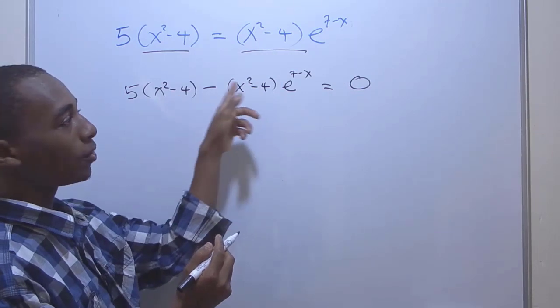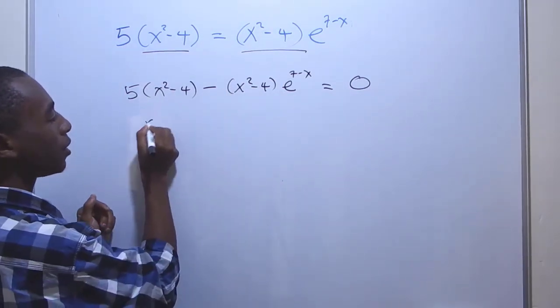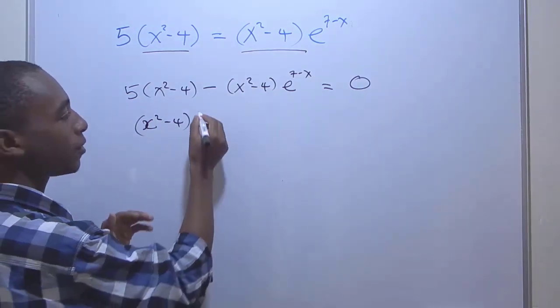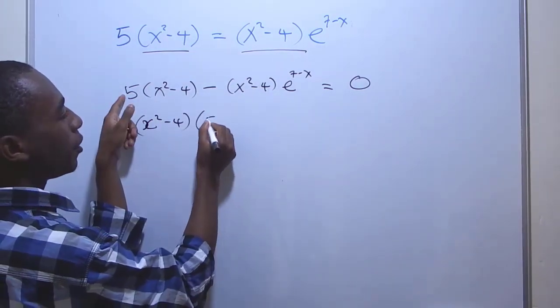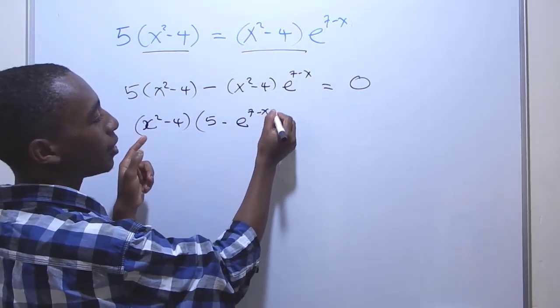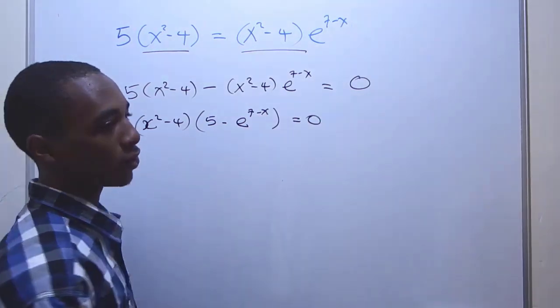Now from here, you can see that this is a common factor. So I can factor that out: x² - 4. So I factorize that out and remain with 5 - e^(7-x) = 0.